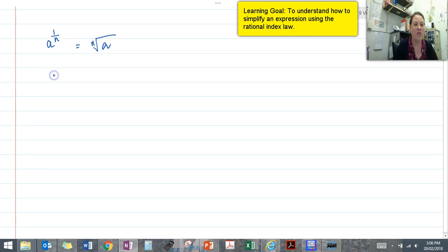If we had a value at the top of our fraction, for example a to the power of b over n, that would be the same as writing the nth root of a to the power of b.